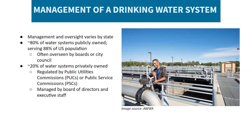Management and oversight of drinking water systems can vary widely by state. About 80% of all drinking water systems in the United States are publicly owned and serve 88% of the US population. These water systems are often overseen by their board of directors if the system is separate from local government, or by a city council or equivalent if part of municipal government. The remaining roughly 20% are privately owned, regulated by public utilities commissions or public service commissions, and managed by a board of directors and executive staff. In some states, public water systems are also regulated by these same entities, such as in Wisconsin.